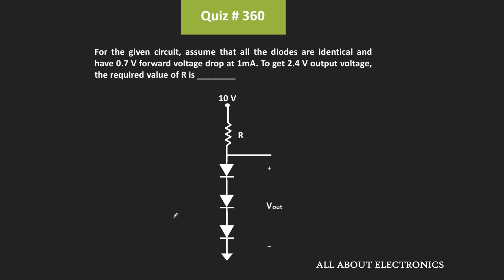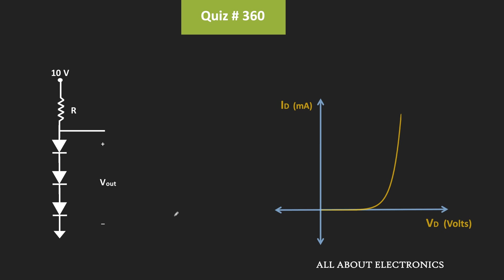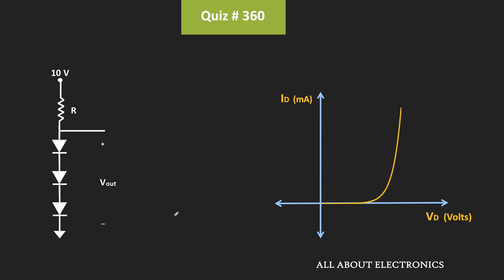So let us find the value of R to get the output voltage of 2.4V. To solve this question, you should be aware of the VI characteristic of the diode and you should know that the forward voltage drop across the diode is a function of the current. That means as the current through the diode increases, the voltage drop across the diode will also increase.